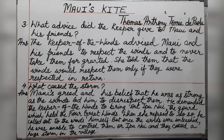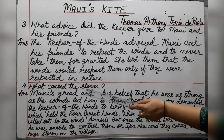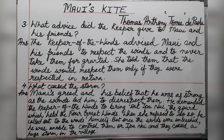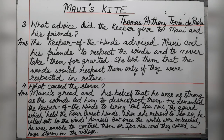Question 4: What caused the storm? Maui did not listen to the keeper of the winds. He thought he was as strong as the winds and he disrespected them, causing the winds to become uncontrollable.